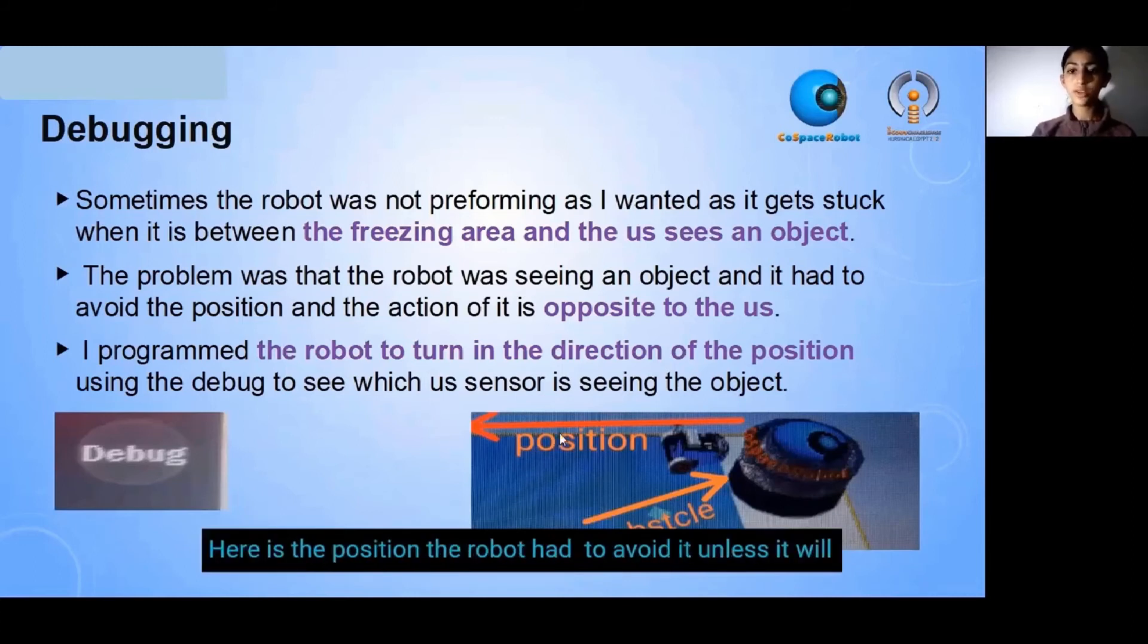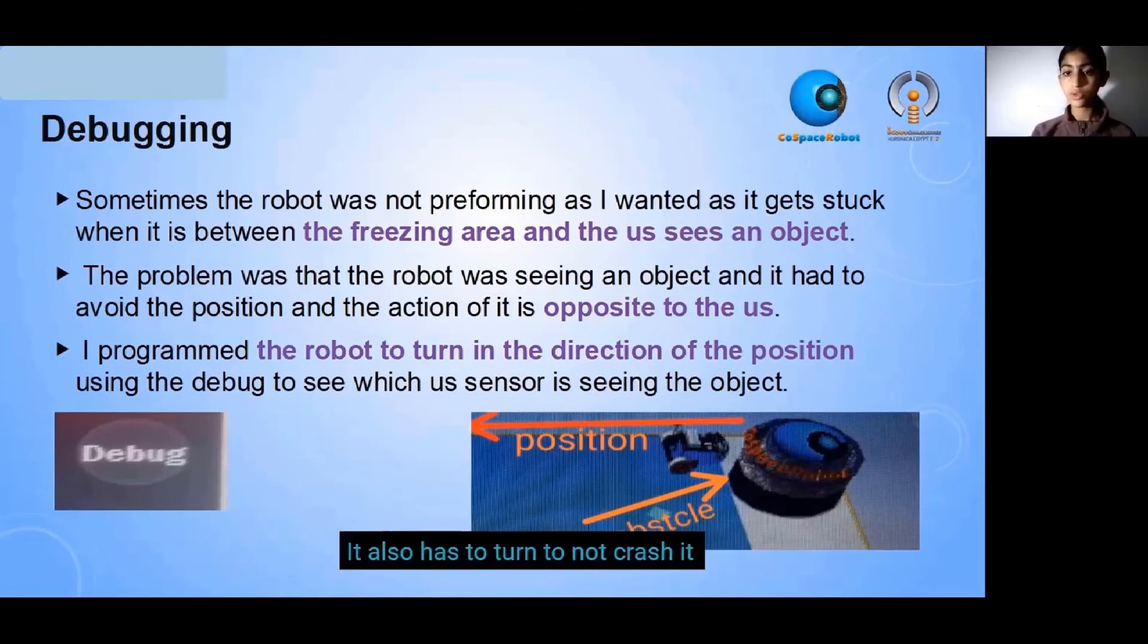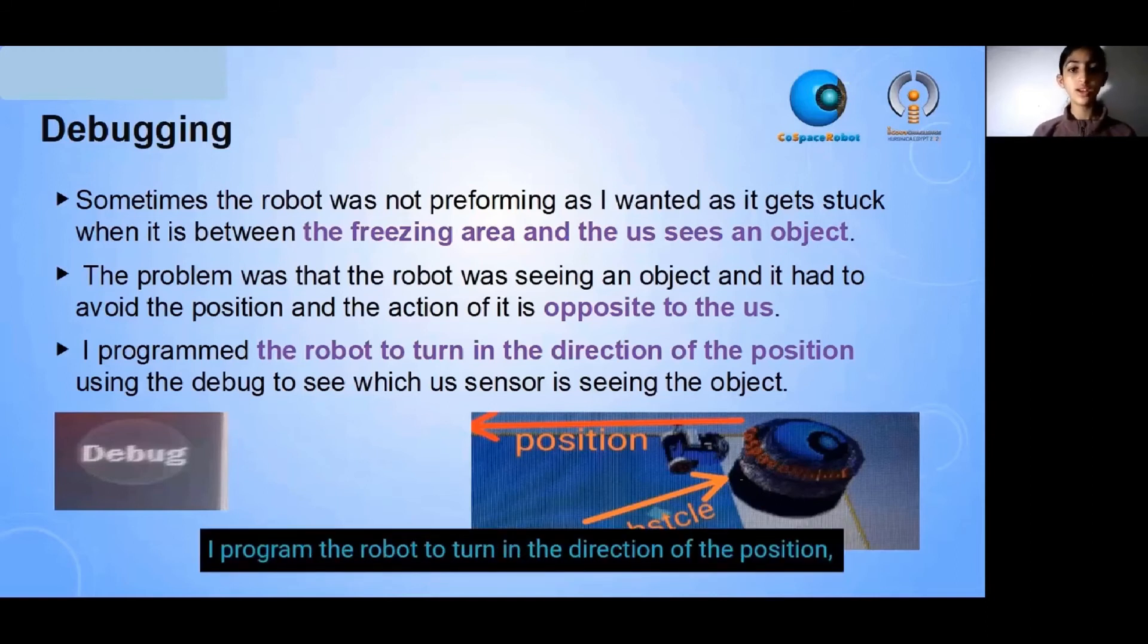Here is the position. The robot has to avoid it unless it will be frozen for 10 seconds. And this is the obstacle. It also has to turn to not crash into it. I programmed the robot to turn in the direction of the position using the debug to see which US sensor is seeing the object.